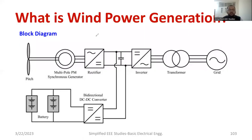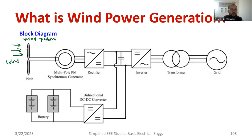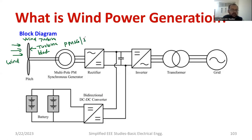I would like to explain the basic block diagram of the wind energy power conversion system. The first block is the wind turbine — this is your wind turbine, and this is the wind hitting on it. This segment is called the turbine blade. The wind turbine is coupled with the permanent magnet synchronous generator or induction generator — whichever is required.